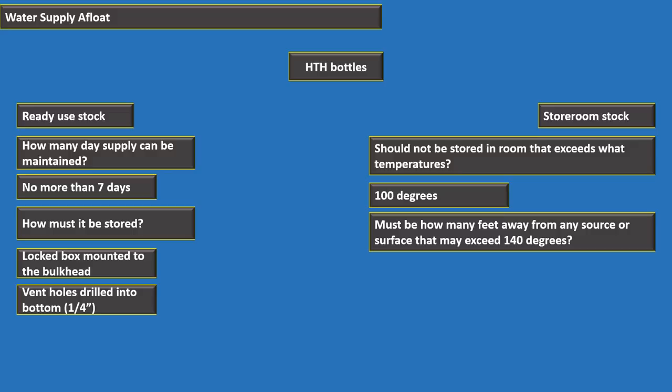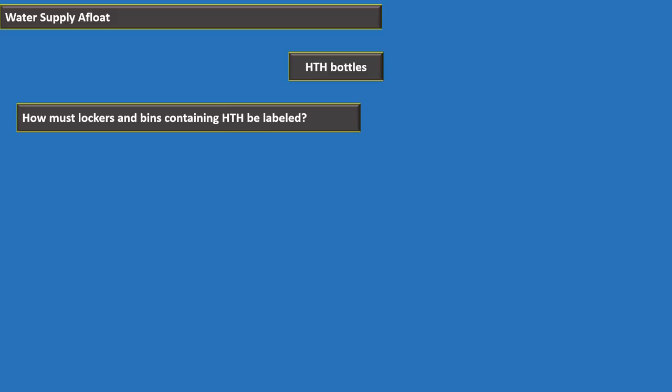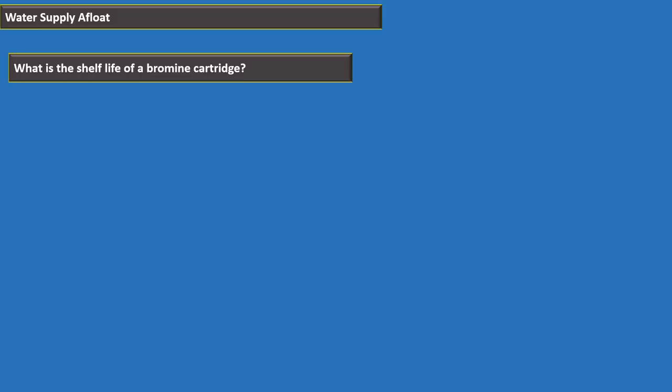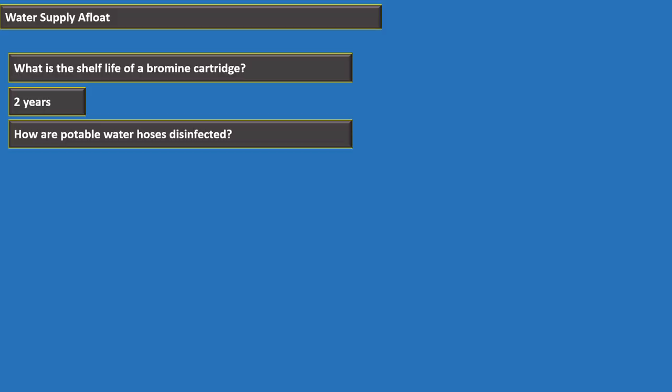Lockers and bins containing HDH must be labeled with red letters on a white background stating 'HAZARDOUS MATERIAL — CALCIUM HYPOCHLORITE.' The shelf life of a bromine cartridge is two years. Potable water hoses are disinfected with 100 parts per million free available chlorine with a two-minute contact time, then flushed with potable water.